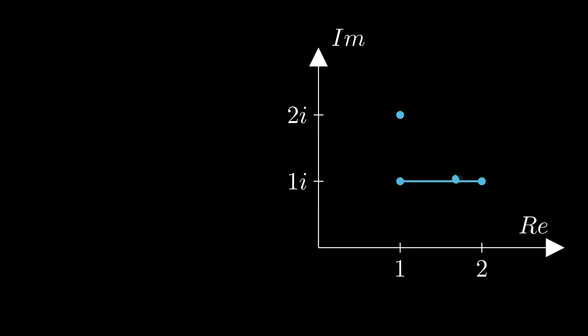We can therefore write 2 plus 1i minus 1 plus 1i. This becomes 2 minus 1, which just results in 1. The vector in the complex plane is therefore 1 plus 0i, as this vector has no imaginary part.